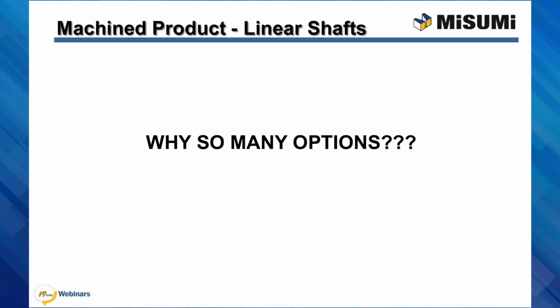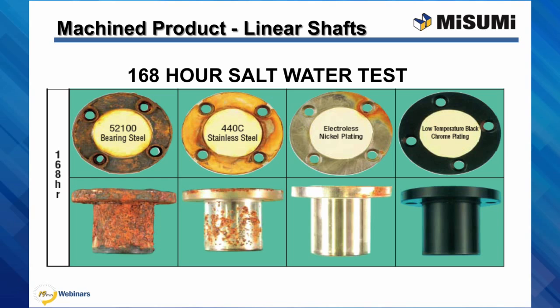So why are there so many material and coating options? Misumi understands that every application is different and depending on the environment, high corrosive protection may be required. Here is a sample of a 168-hour salt water test on the different finishes offered by Misumi. Our most cost-effective 52-100 bearing steel option is not recommended for highly corrosive environments. Depending on the severity of the environment, Misumi offers different levels of protection, with low temperature black chrome plating as the highest level of corrosion resistance.